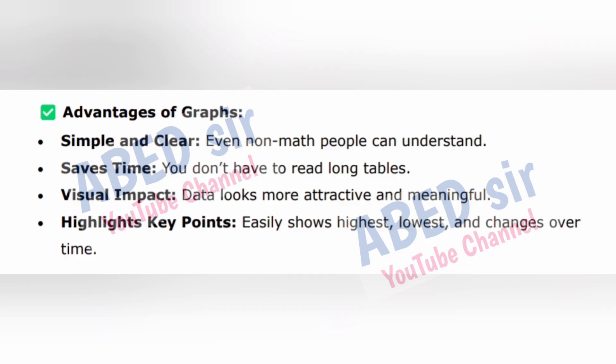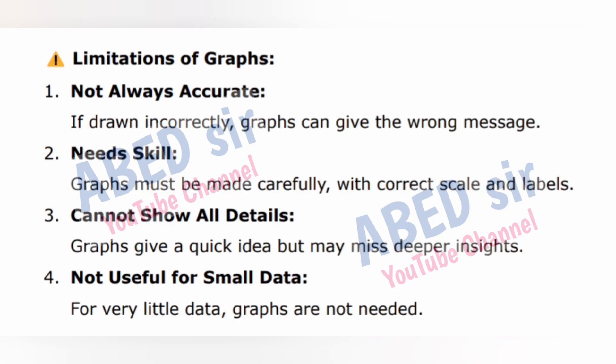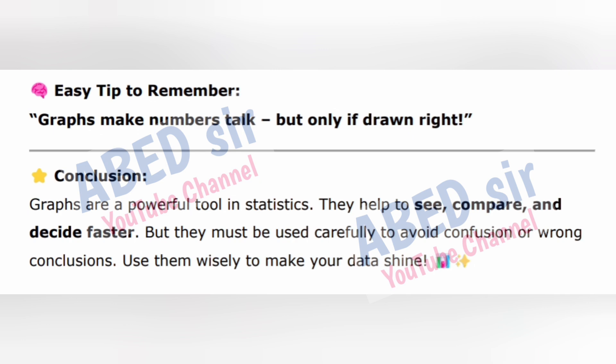Advantages include easily showing highest, lowest, and changes over time. Limitations of graphs: 1. Not always accurate — if drawn incorrectly, graphs can give the wrong message. 2. Needs skill — graphs must be made carefully with correct scale and labels. 3. Cannot show all details — graphs give a quick idea but may miss deeper insights. 4. Not useful for small data — for very little data, graphs are not needed. Easy tip: Graphs make numbers talk, but only if drawn right. Conclusion: Graphs are a powerful tool in statistics — they help us see, compare, and decide faster, but must be used carefully to avoid confusion or wrong conclusions.